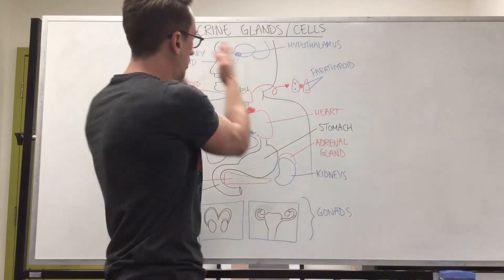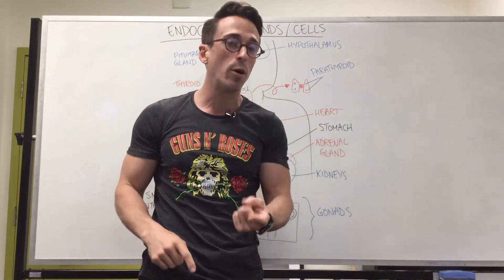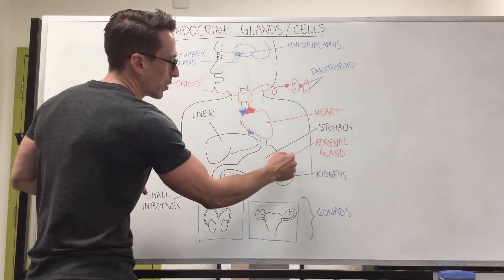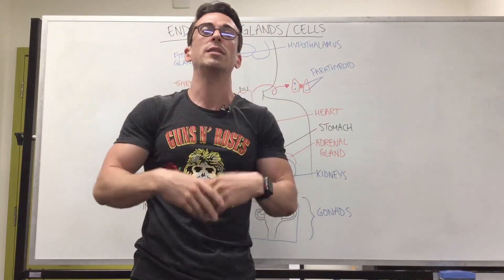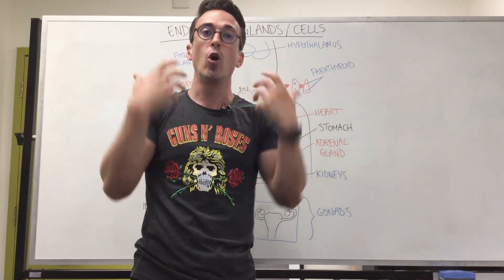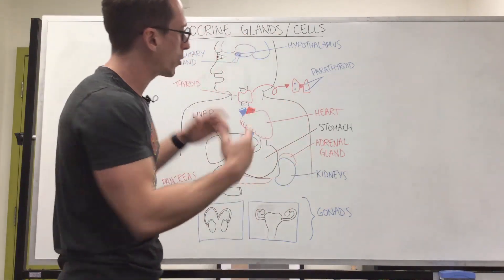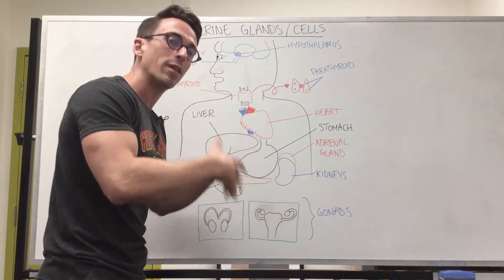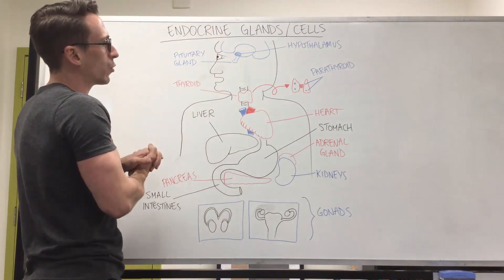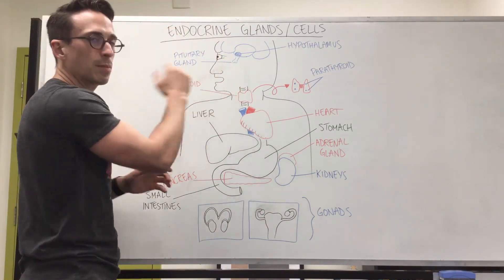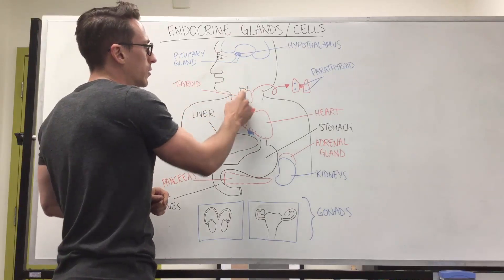The anterior pituitary gland also produces adrenal corticotropic hormone. This is a hormone that travels to the adrenal gland, specifically the adrenal cortex, to release a number of adrenal hormones. There's also growth hormone, which plays an important role in metabolism, growth and development. The anterior pituitary gland also releases thyroid stimulating hormone, which travels to the thyroid gland and tells it to release hormones.